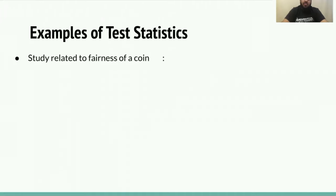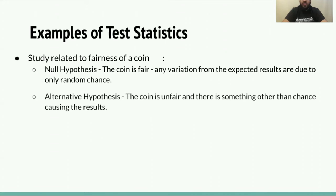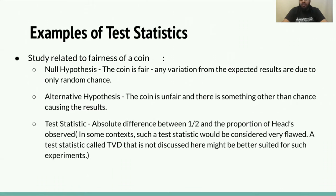Another example is the coin fairness study — null: coin is fair; alternative: coin is unfair. The test statistic could be the absolute difference between 0.5 and the proportion of heads observed. This test statistic is actually pretty basic and in some contexts could be considered flawed. We could alternatively use TVD — total variation distance — which might be better suited for such experiments. I encourage you to read more on it since it could be useful in hypothesis testing applications further down the line.